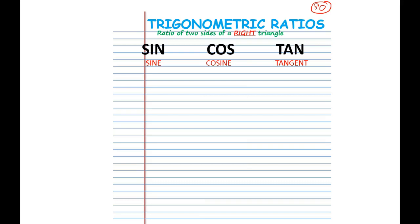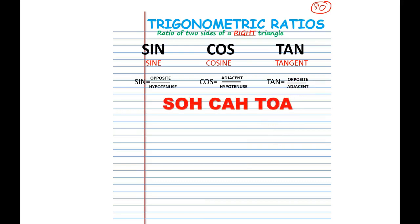You have your sine, cosine, and tangent. The sine of an angle is the ratio of the opposite over the hypotenuse. Cosine is adjacent over hypotenuse. And tangent is opposite over adjacent. A great way to remember that is SOH-CAH-TOA — S-O-H-C-A-H-T-O-A: sine is opposite over hypotenuse, cosine is adjacent over hypotenuse, and tangent is opposite over adjacent.